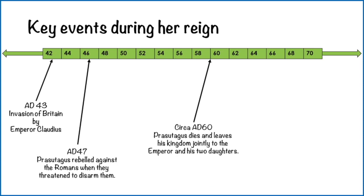Around 60 AD, Prasutagus dies and leaves his kingdom jointly to the Roman Emperor and his two daughters. This broke with tradition, as normally it would be left to the Roman Emperor alone. But Prasutagus was keen to maintain that independence which he'd fought for in AD 47. Safe to say, the Romans didn't listen — they took the lands and beat Boudicca and her daughters. They were whipped by slaves, which is an awful thing to happen to anyone.